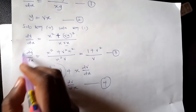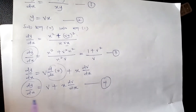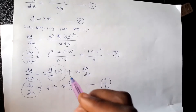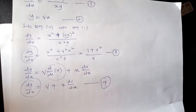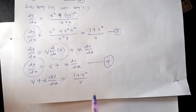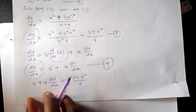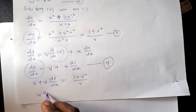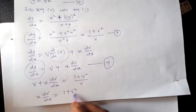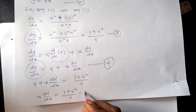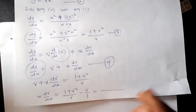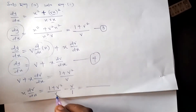We have dy/dx in both equations, so we can equate them and rearrange. Bringing the v dx to one side gives us (1 + v²)/v minus v/1. Using LCM of v and 1, which is v: v divided by v gives one, so we have 1 + v² minus v times v, which gives v².